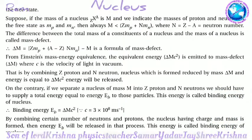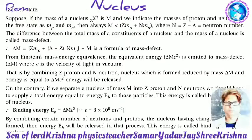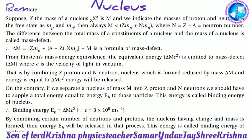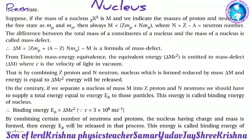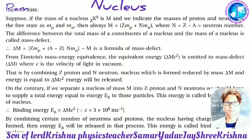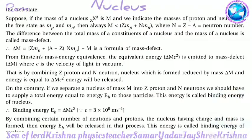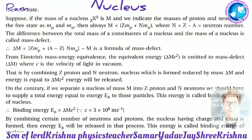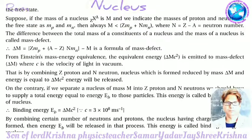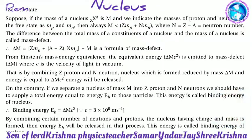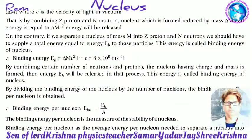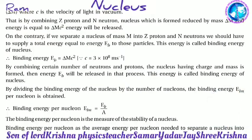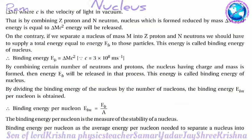On the contrary, if we separate a nucleus of mass M into Z protons and N neutrons, we must supply a total energy Eb to those particles. This energy is called the binding energy of the nucleus. Binding energy Eb = ΔMc², where c = 3 × 10⁸ m/s.